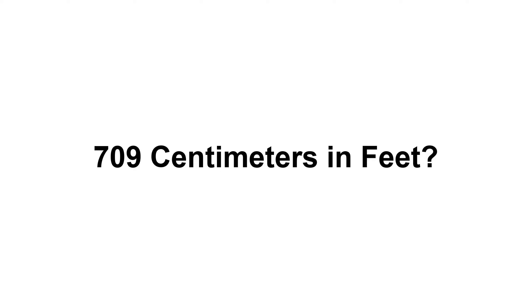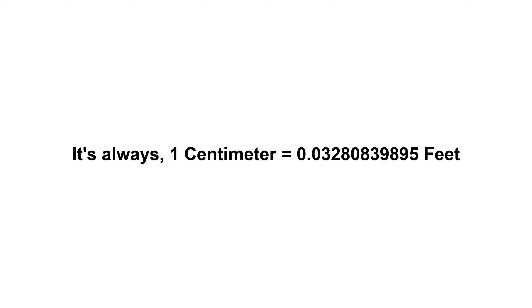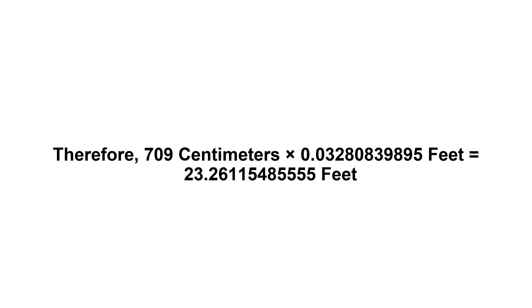709 centimeters in feet. First of all, we need to know the value of one centimeter in feet — one centimeter equals 0.03280839895 feet. Now we have to multiply 0.03280839895 by 709. Therefore, 709 centimeters times 0.03280839895 feet equals...